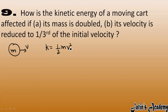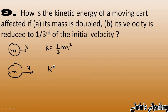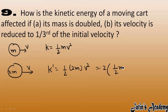We have to calculate the kinetic energy in terms of initial kinetic energy. For a body of mass 2m moving with velocity v, kinetic energy K' = ½ × 2m × v² = 2 × (½mv²). So K' equals 2 times the initial kinetic energy.